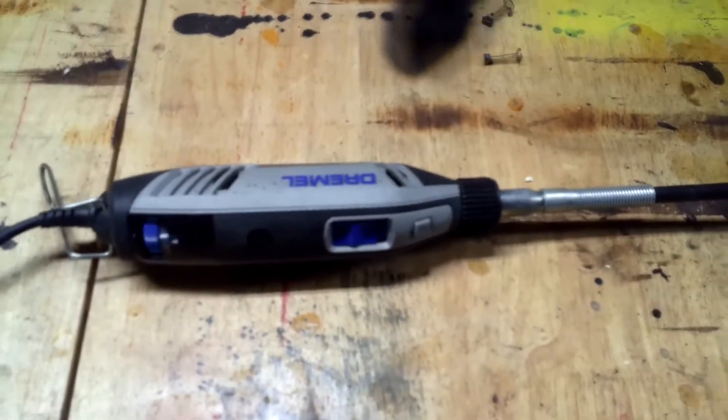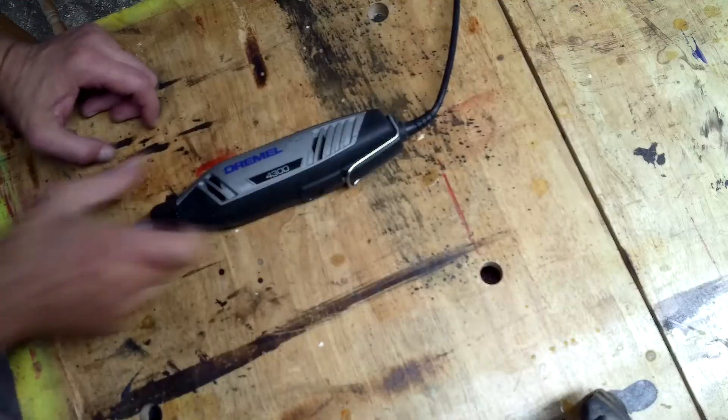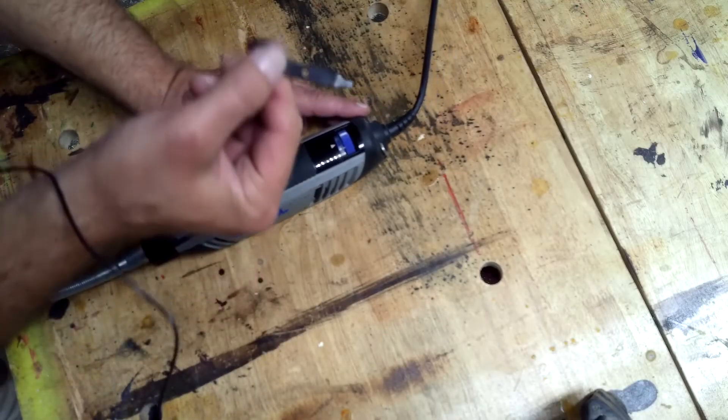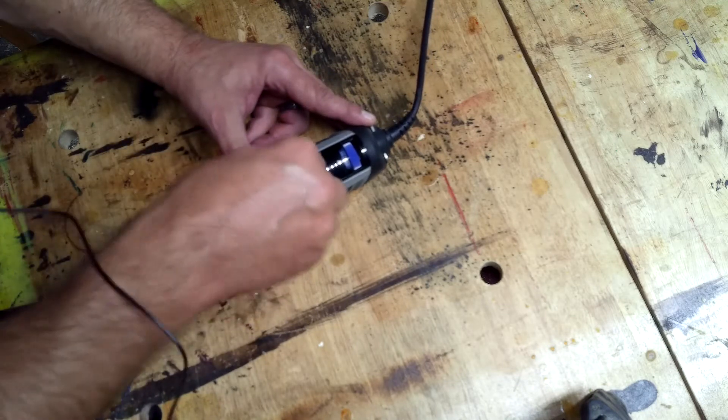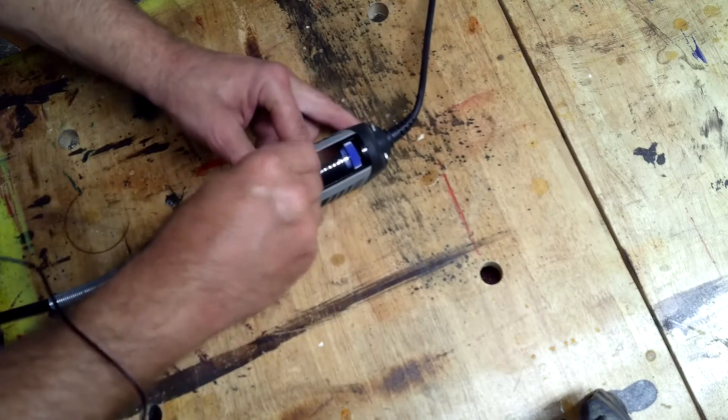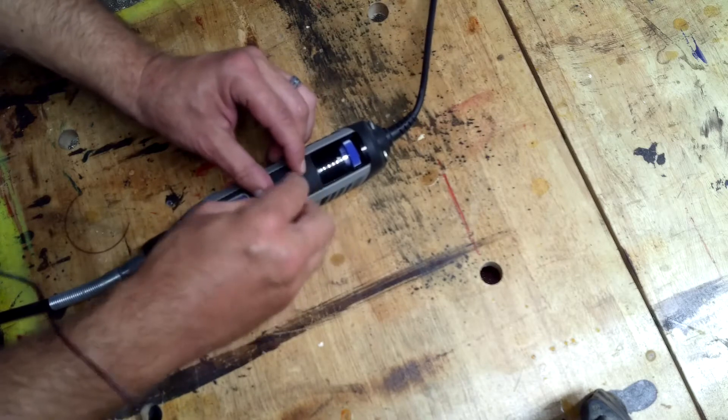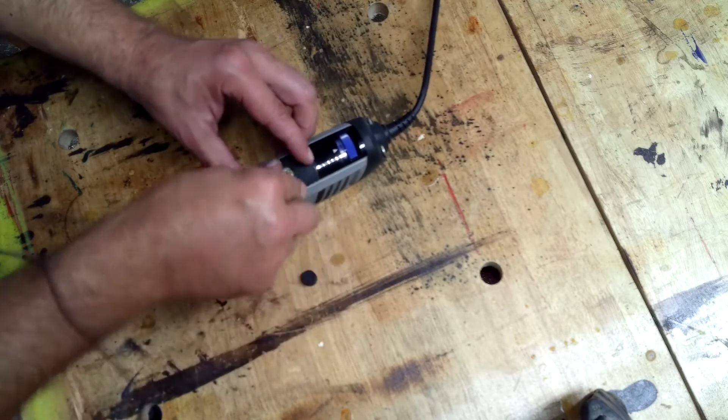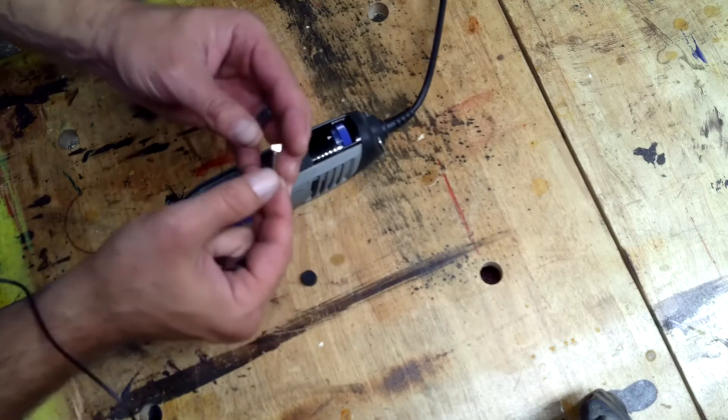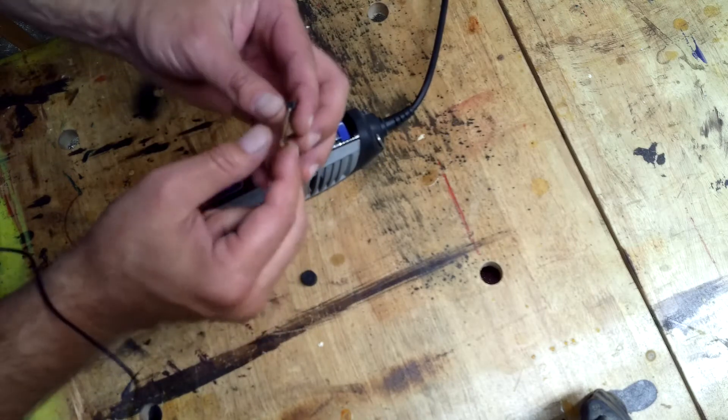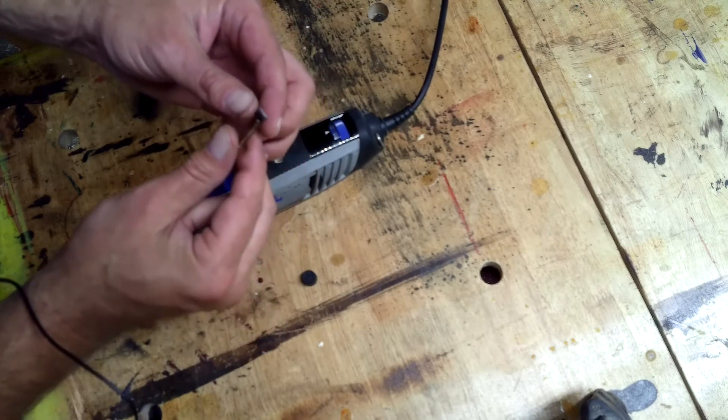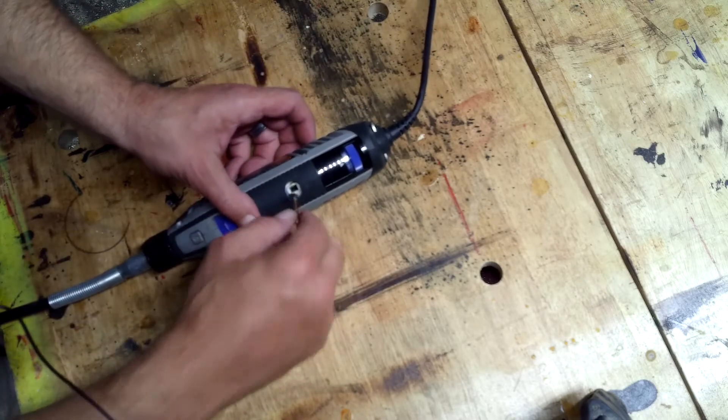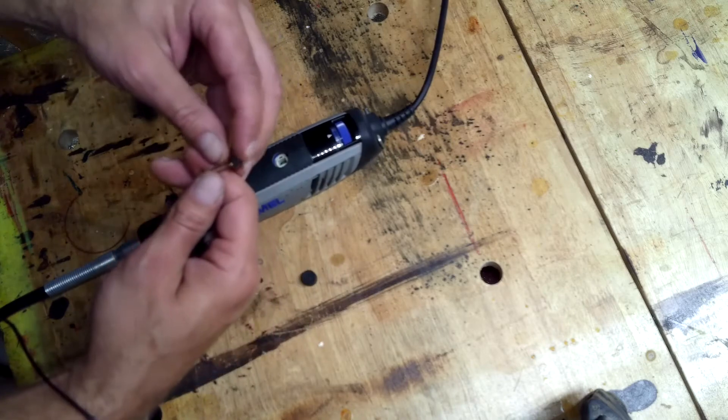Alright, most Dremel models come with this handy little wrench, and there's one of these on the top and one on the bottom. This is where the brushes are, and you can see how that's worn pretty bad. A lot of times you can just take them and turn them the opposite direction and get some more life out of them, but these are worn down pretty good, so we'll be replacing these today.